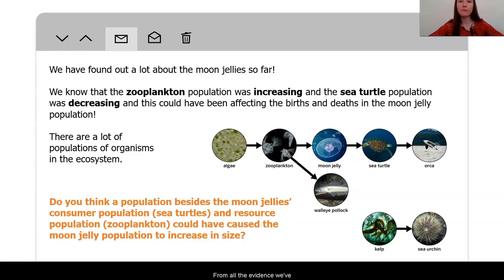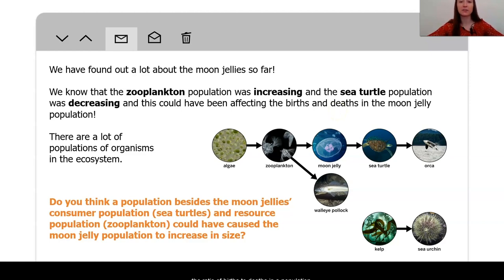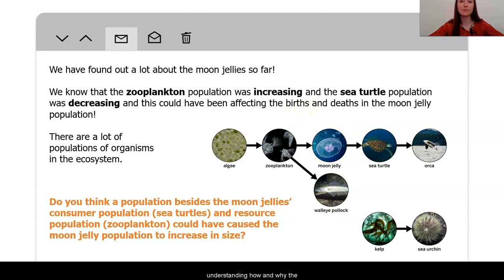From all of the evidence we've been collecting, we have seen that when a consumer population is changing, that can affect the number of deaths in their resource population. Because we know population changes happen based on the ratio of births to deaths in a population, we know that this is really important information for understanding how and why the Moon Jelly population is changing.